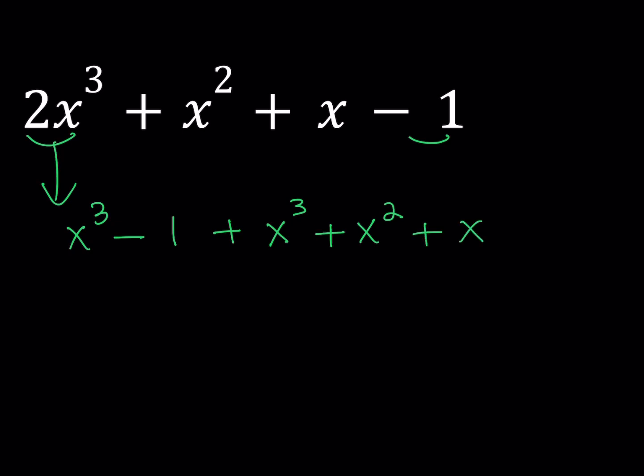Now, why did I do this? Because there's a reason. First of all, this is a difference of 2 cubes. And second of all, this expression is also somewhat special. How do you factor this one? You write it as (x - 1) multiplied by (x² + x + 1). A super-duper important formula.